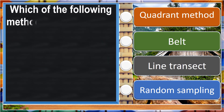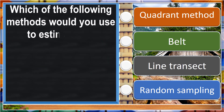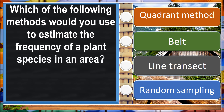Which of the following methods would you use to estimate the frequency of a plant species in an area? Quadrant method.